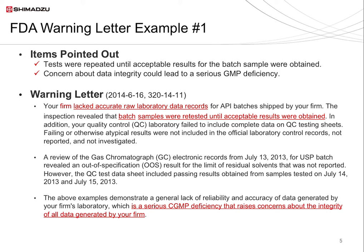I would now like to describe the background to these observations by going through three actual FDA warning letters. The first example is a letter dated June 16, 2014. The FDA noted batch samples were retested until an acceptable result was obtained. An analysis was being repeated multiple times. The operator watched the chromatogram as data was displayed, and if it did not meet their expectations, they pressed a button that stopped the ongoing analysis and then repeated the analysis until the desired result was obtained, with only the best result being used. The FDA commented that any data obtained in this way could not really be trusted.